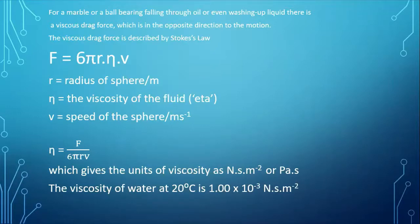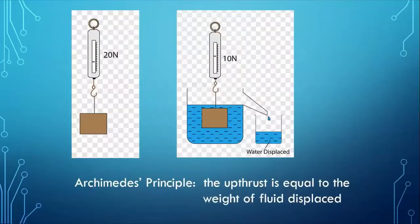So, we've defined our terms R eta V. And eta equals F over 6 pi R V, which gives the units of viscosity as Newton seconds meters to the minus two or Pascal seconds. Since pressure equals force over area, which is Newtons over square meters. And a figure, I wouldn't remember this, but the viscosity of water at 20 degrees centigrade, I found out is taken as one times 10 to the minus three Pascal seconds.